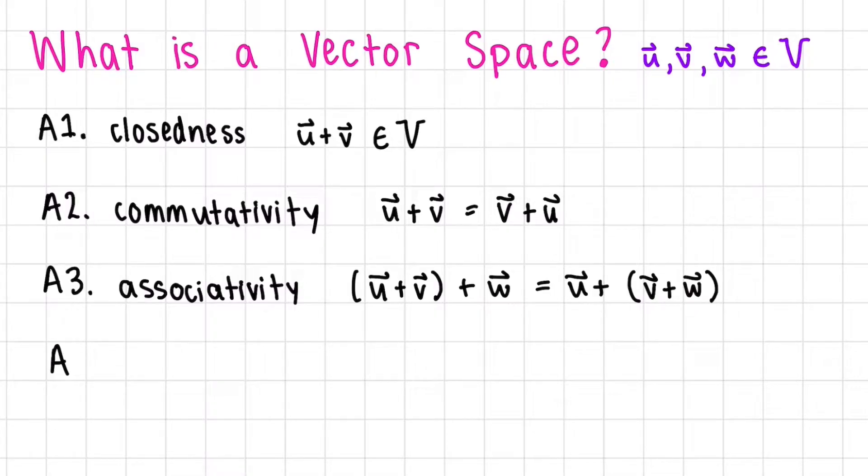Next, we have the zero vector. Now, the zero vector doesn't always have to be zero. It just has the property that the zero vector plus V is itself. So it does nothing. And of course, this zero vector has to be included in our space, V.